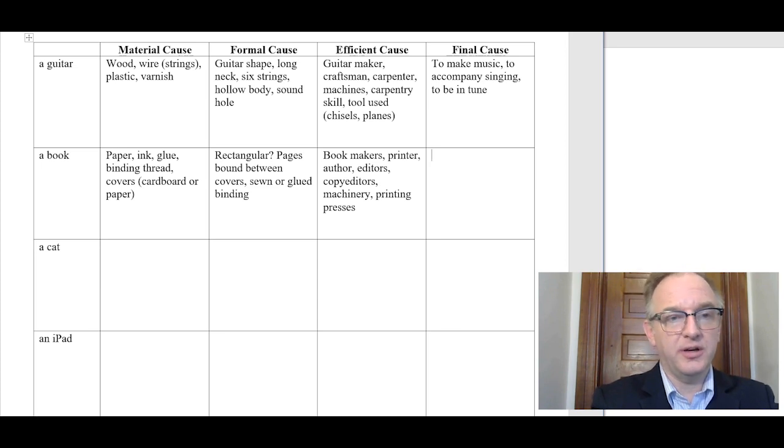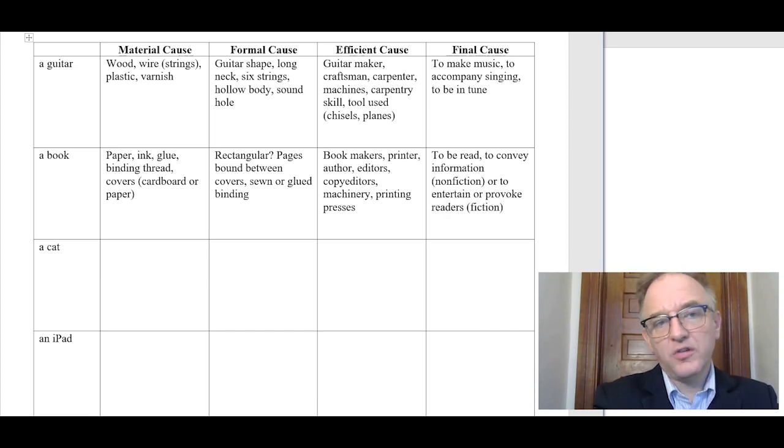Final cause of a book. To be read, presumably. Books that are not read seem to be failing in their purpose somehow. I'm going to say the purpose of a book really is to convey the information the author wishes to convey to the reader in the case of nonfiction books, or to entertain or provoke the reader in the case of fiction books. Maybe also that the book should be readable. So if it fails to be readable because it's printed in too small a type, it's failed somehow to achieve the final cause or telos of a book.